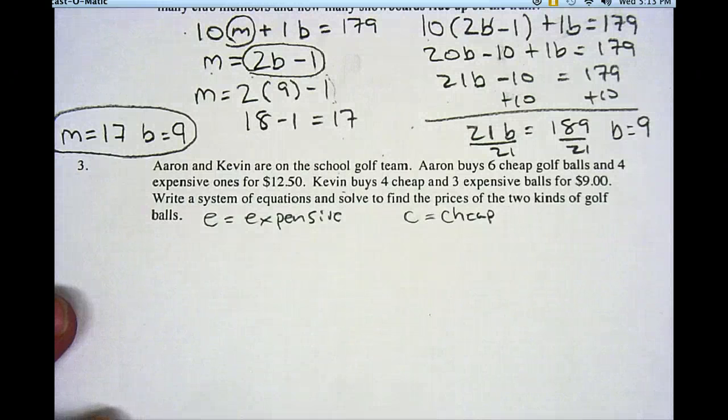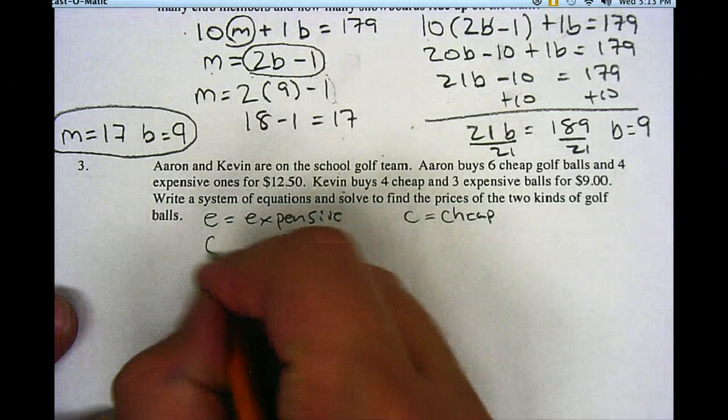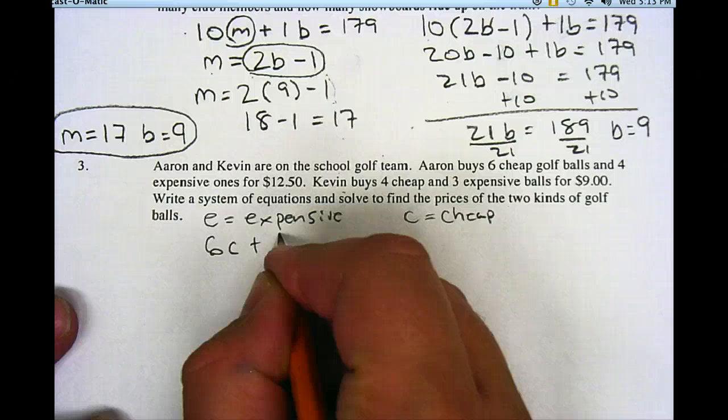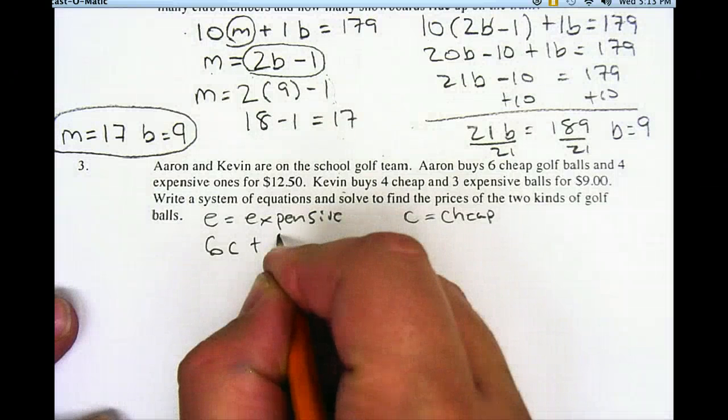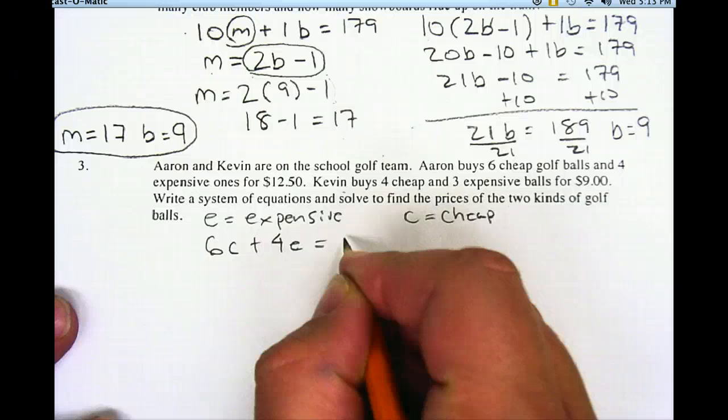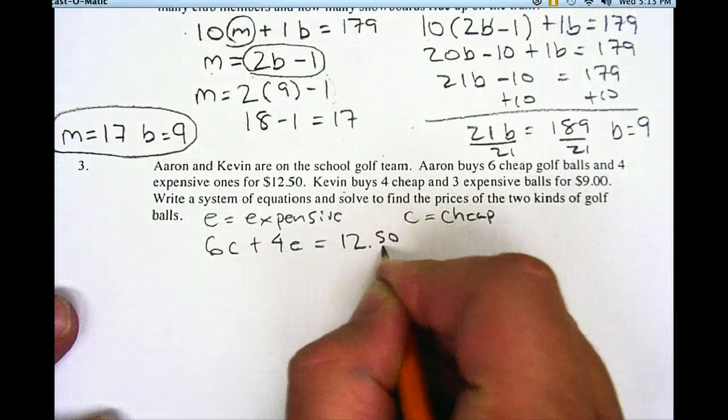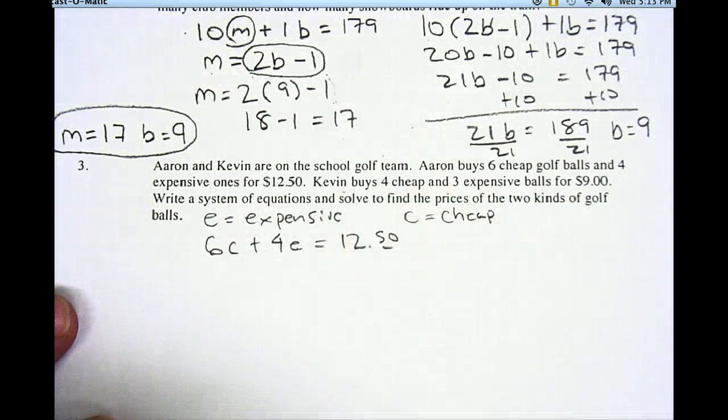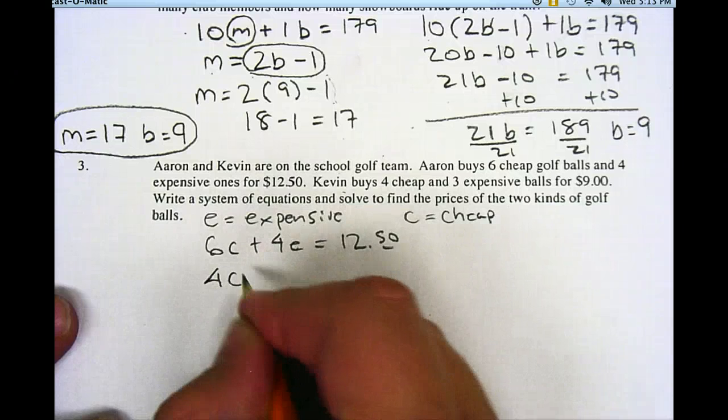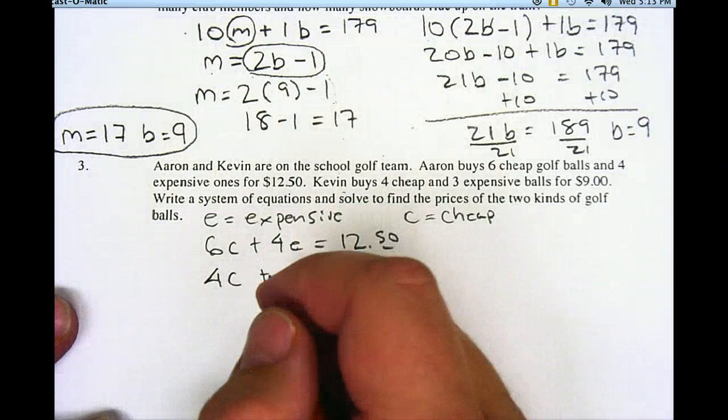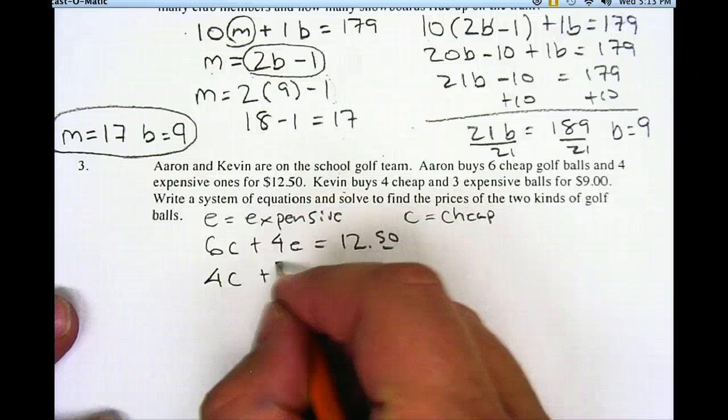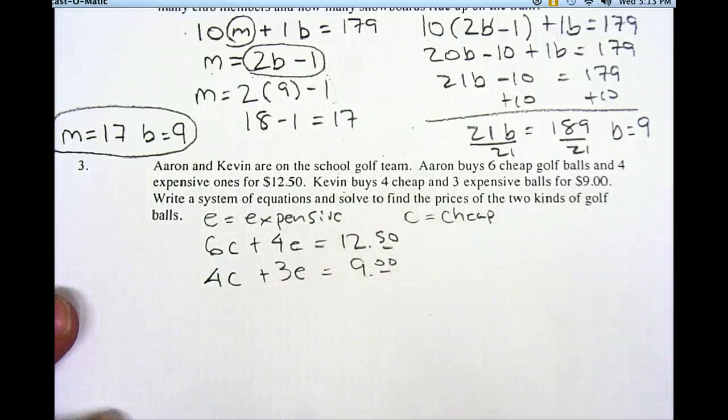So if I look at the first part about Aaron, he has six cheap ones plus four expensive ones, and that's equal to $12.50. And Kevin buys four cheap golf balls and three expensive ones for $9.00.